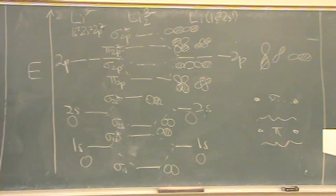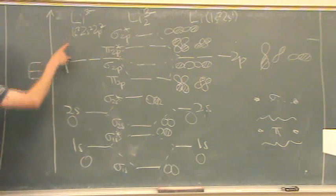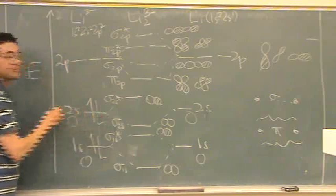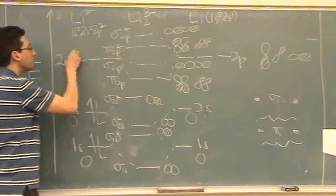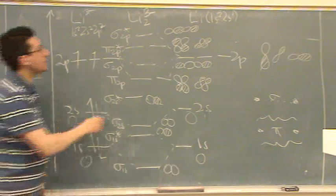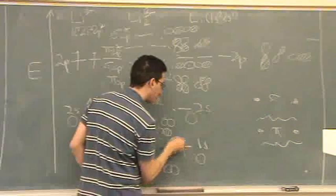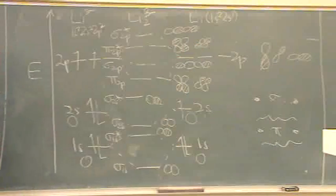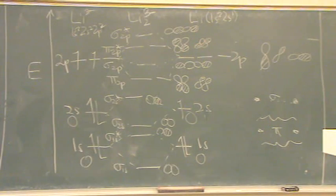So now I'm going to do my electron filling. On the left hand side I have 1s2, a 2s2, and a 2p2. On the right hand side I have 1s2, 2s1. Done.